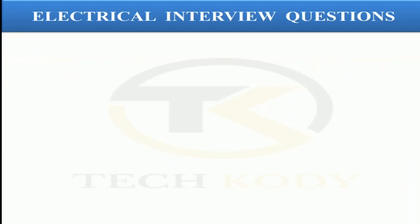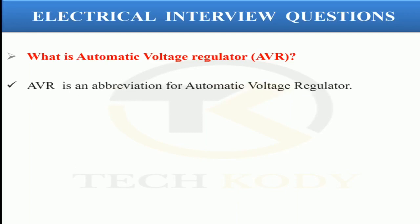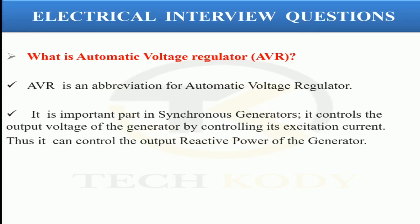The next question is: what is an automatic voltage regulator? The automatic voltage regulator is the heart of the synchronous generator. It controls the output voltage of the generator by controlling its excitation current. Thus, it can also control the output reactive power of the generator.